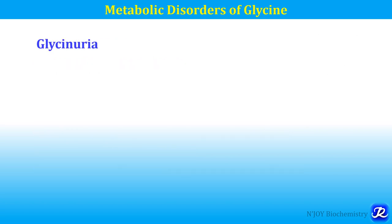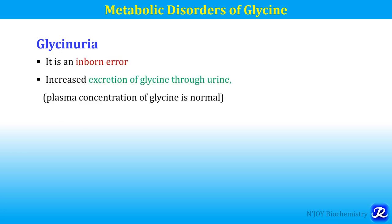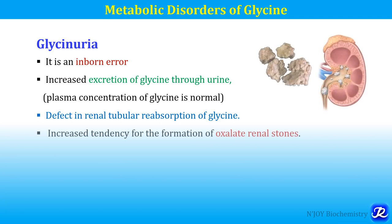The next metabolic disorder is glycinuria — excretion of glycine in urine. It is an inborn error where there is increased excretion of glycine through urine, though plasma concentration of glycine is normal. This is because of a defect in the renal tubular reabsorption of glycine, and there is an increased tendency for formation of oxalate renal stones.